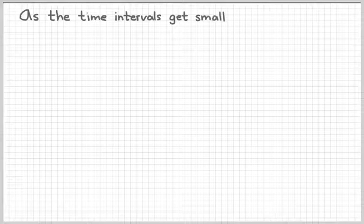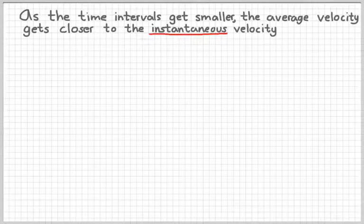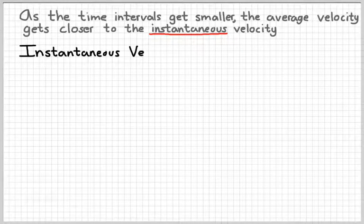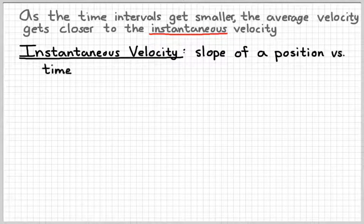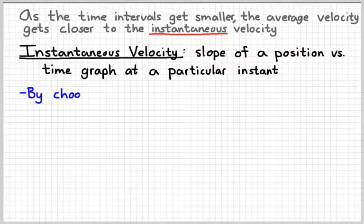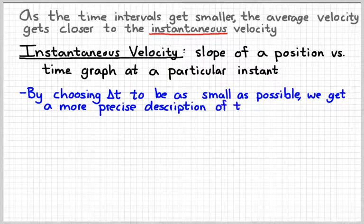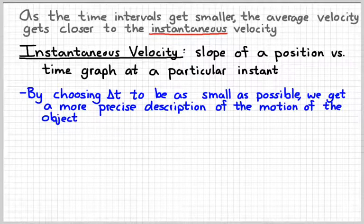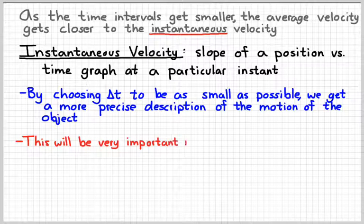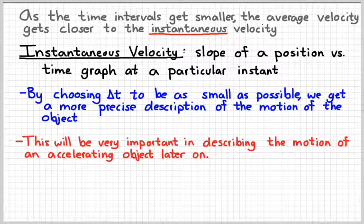So, by making our interval smaller, we can get a more accurate idea of what the motion actually looks like. The big idea is that as we make that time interval smaller, the average velocity gets closer to the instantaneous velocity — the velocity at that particular point. We can find that by finding the slope of the position versus time graph at that particular instant. This is going to become much more important when we get to accelerated motion, where something is speeding up or slowing down and the instantaneous velocity is the thing that is changing.